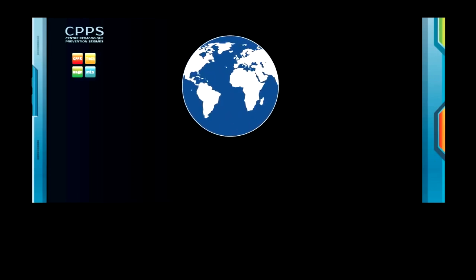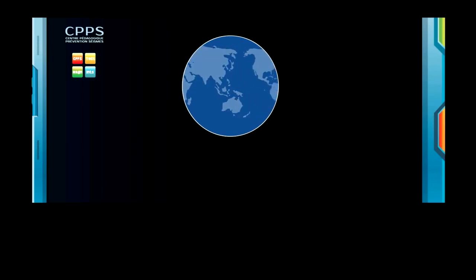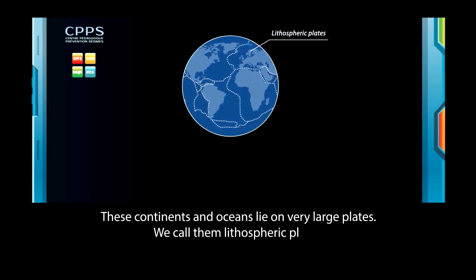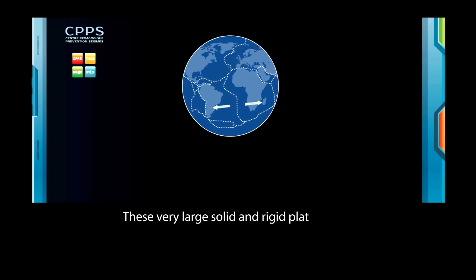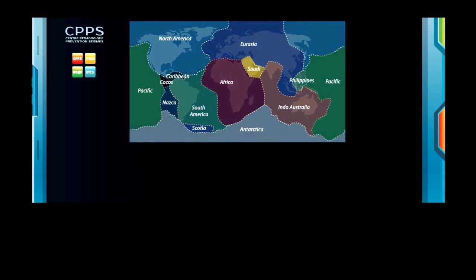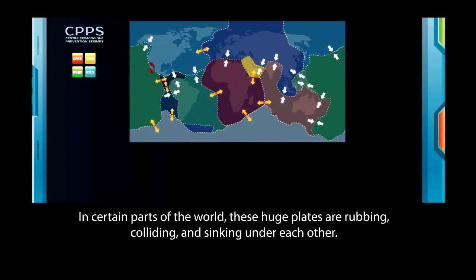Valais, here is our planet with its continents and its oceans. These continents and oceans lie on very large plates. We call them lithospheric plates. These very large, solid and rigid plates move very slowly by a few centimeters each year. In certain parts of the world, these huge plates are rubbing, colliding and sinking under each other.